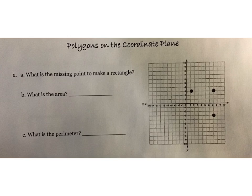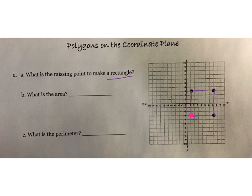For this one, we've got some different points and we need to make it into a rectangle. Remember, your lengths are going to be the same and your widths will be the same, because two sides will be the same. I kind of draw my line coming down this way and then across, to see that your missing point is going to be right here, so you can make this into a rectangle.